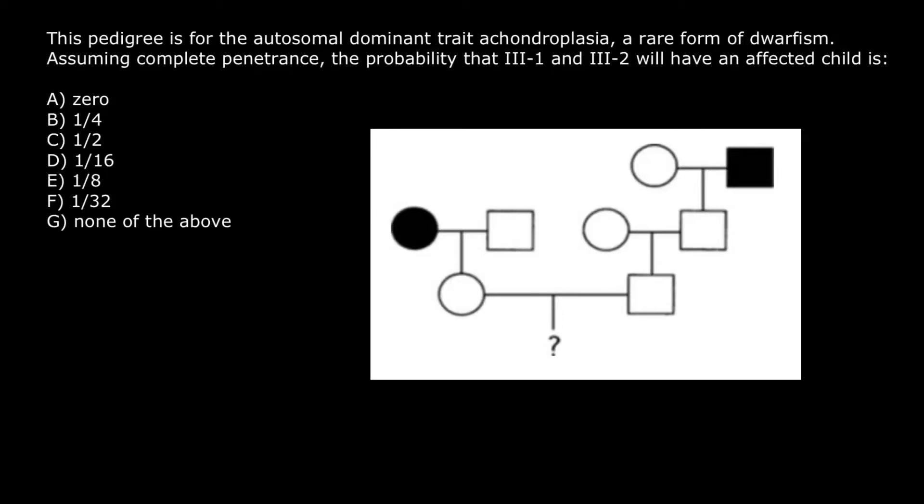And today's problem is, this pedigree is for autosomal dominant trait achondroplasia, a rare form of dwarfism.